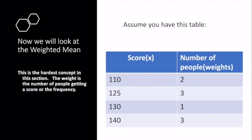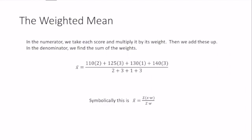Assume I have this table. I have the score and the number of people. The score is our x value and the number of people is our weights. For the weighted mean, we want to take each weight times its score. We add them all up and then we divide that by the sum of the weights. Symbolically, we represent it like this. X bar, which means sample mean, is the sum of all of our scores times their weight divided by the total number of weights.